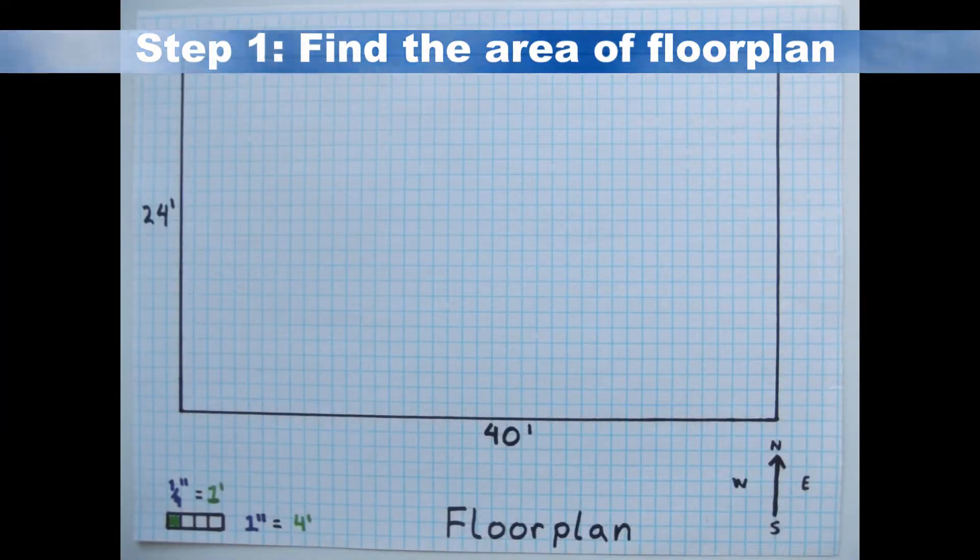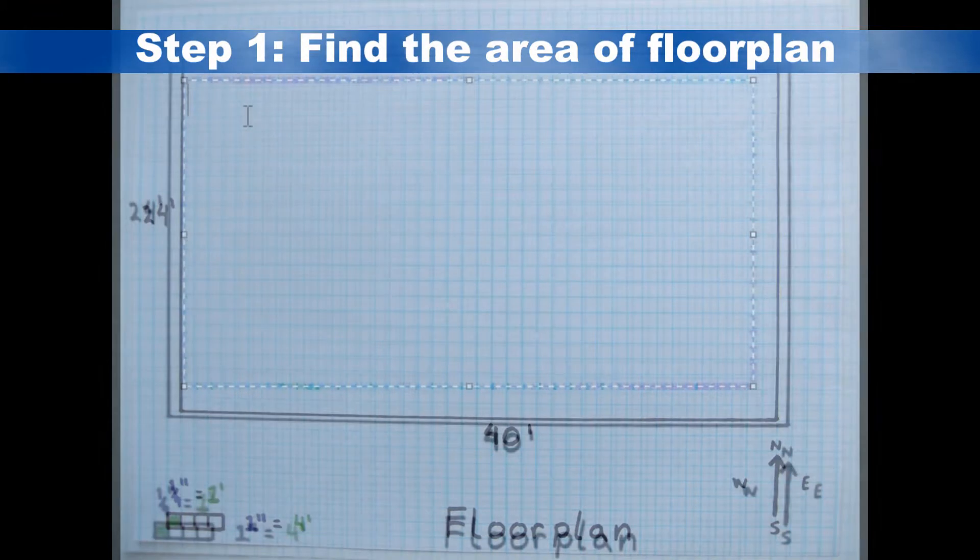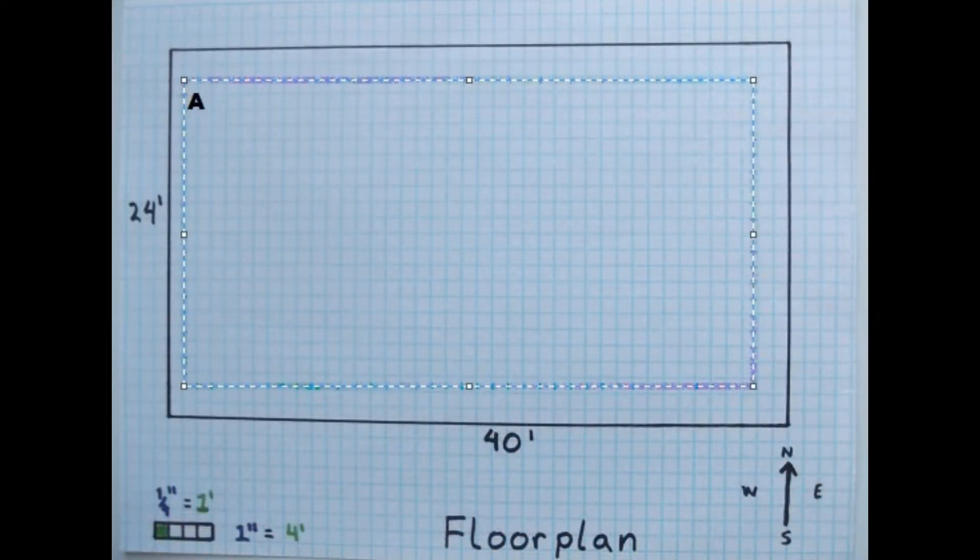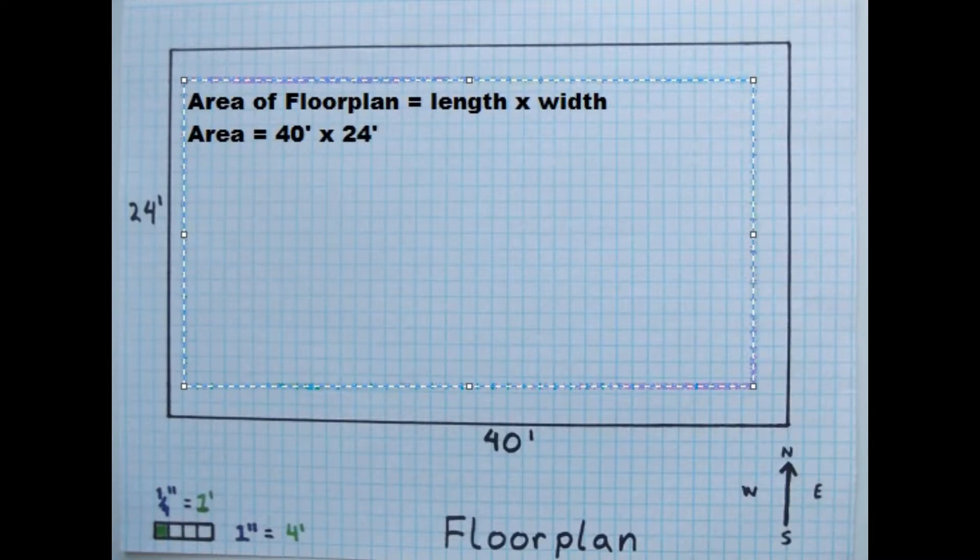Our first step is to find the area of the floor plan. To find the area or square footage of your house, multiply the length times the width. So for a house that is 24 feet wide and 40 feet long, your square footage is 960 square feet. If your house has more than one story, do your calculations for the first floor, then repeat the same process for the other floors.